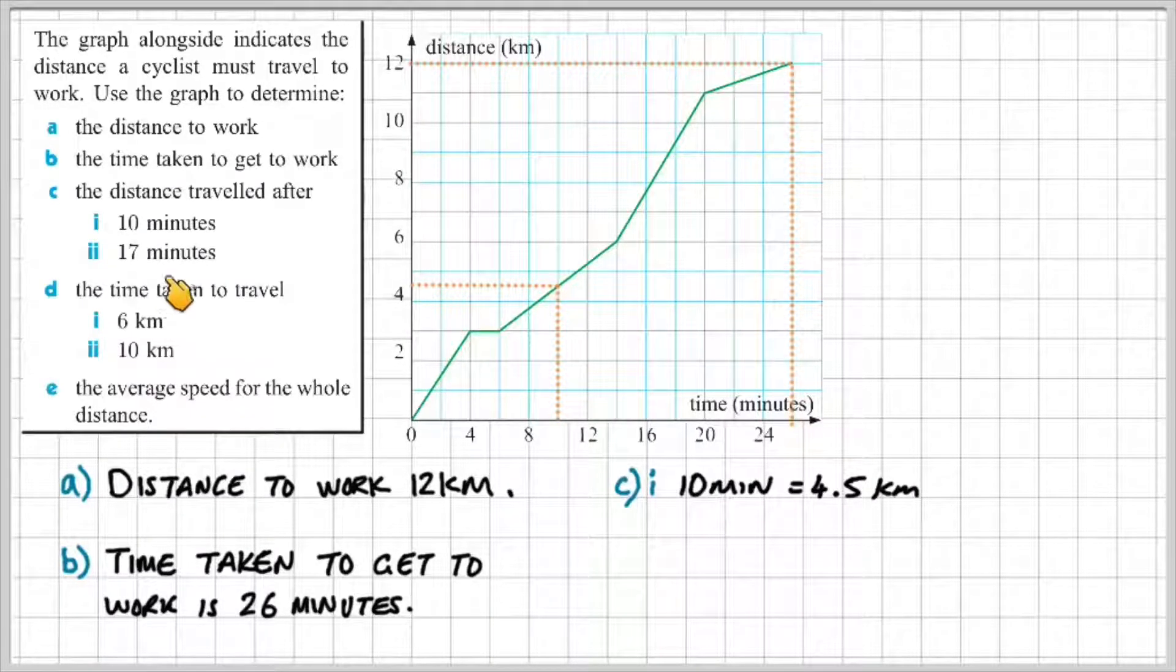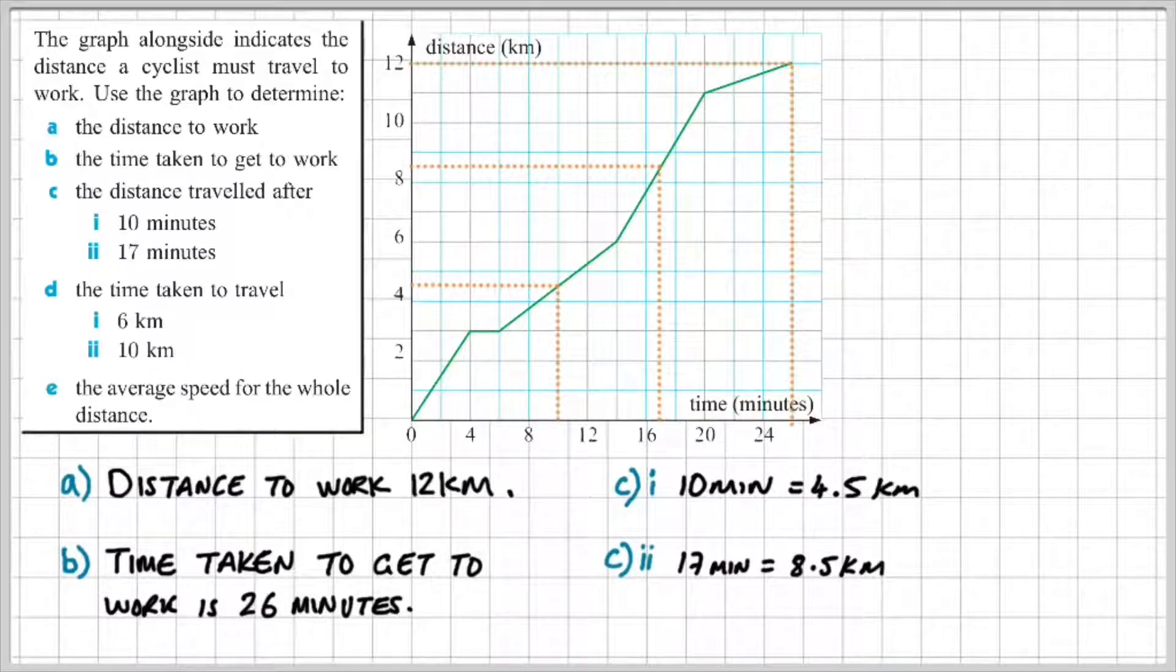In the same way, we can find the 17th minute on the x-axis, which is about here, and we can draw a line up to the graph and across. And we can read off the y-axis that we have about 8.5 kilometres. So after 17 minutes, the cyclist has travelled 8.5 kilometres.